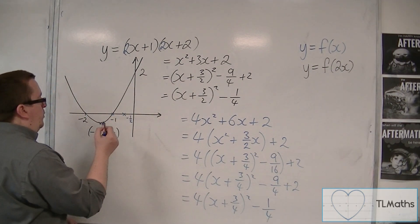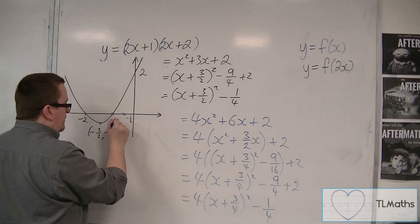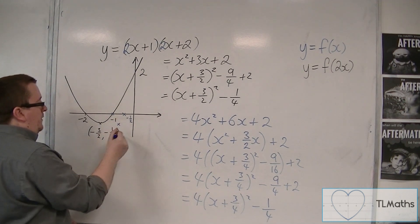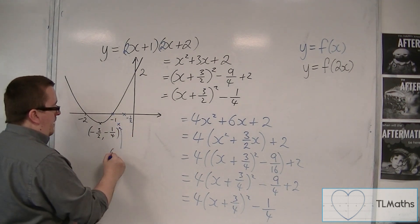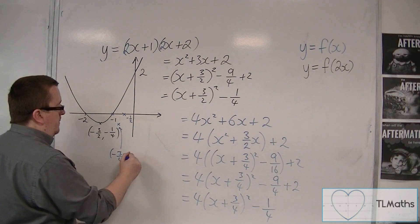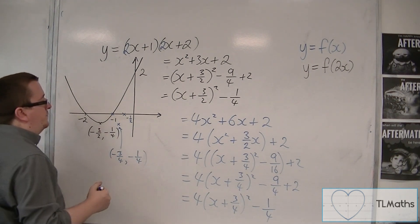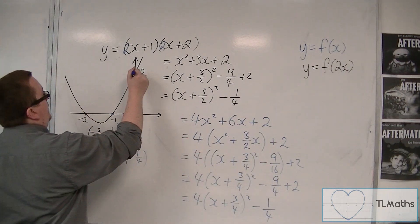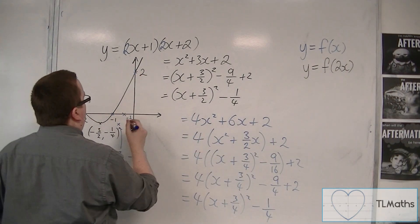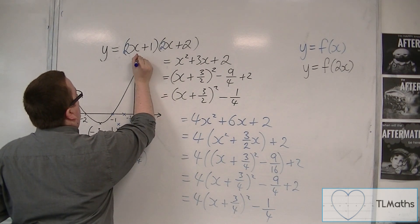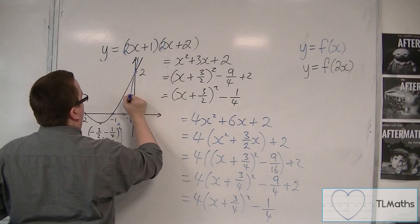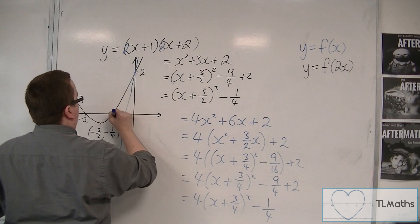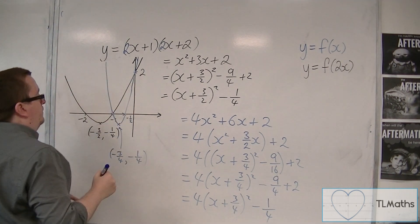Now minus 3 quarters is here. So this point is minus 3 quarters, minus 1 quarter. Now, it is still crossing at 2 on the y-axis. So this curve now looks like this.